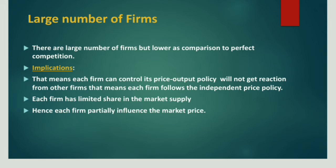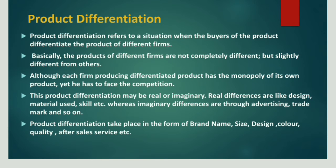There is a large number of firms as compared to monopoly, but less as compared to perfect competition. They have a price-output policy and will not react from other firms — meaning each firm follows an independent pricing policy, because they mark their product differentiation. There is product differentiation in the supply, offered by different firms in terms of size, brand name, design, color, quality, service, etc. This creates a very strong influence on customers, as design and skill attract them.